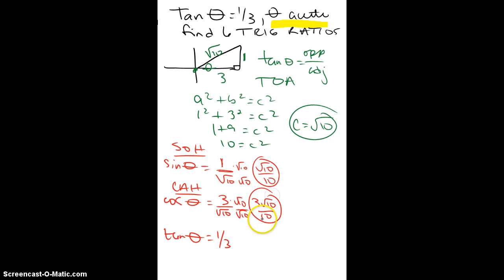It might be that the 3 and the 10 reduce—outside numbers with outside, radicals with radicals—but 3 doesn't go into 10. And then tangent is given.